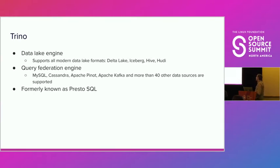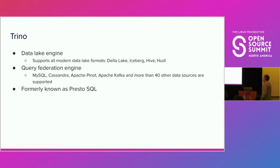Trino is also a query federation engine, allowing you to query data from more than 40 popular data sources such as MySQL, Cassandra, Apache Pinot, Apache Kafka, and many more. It's also formerly known as PrestoSQL.